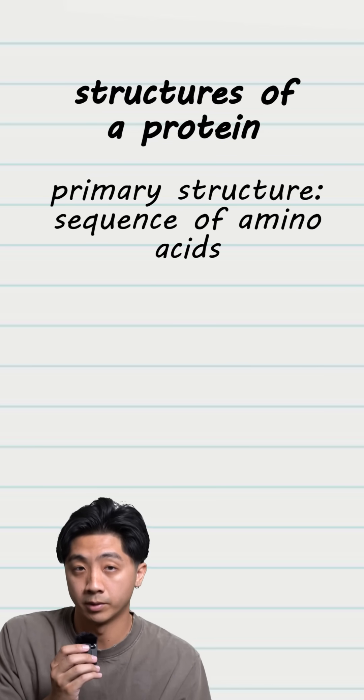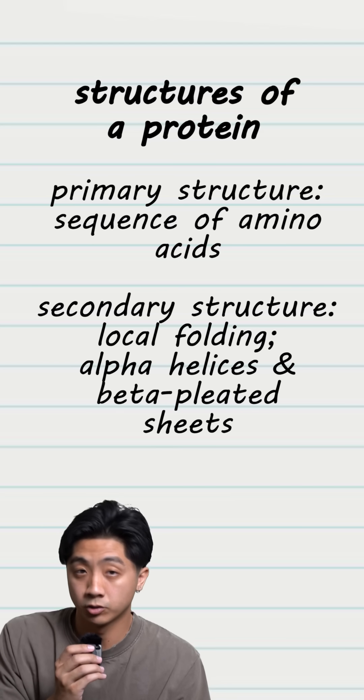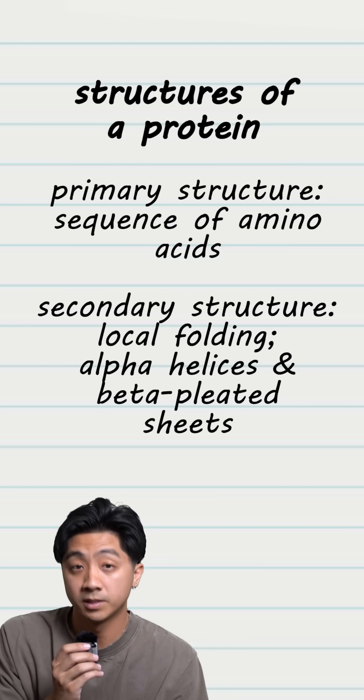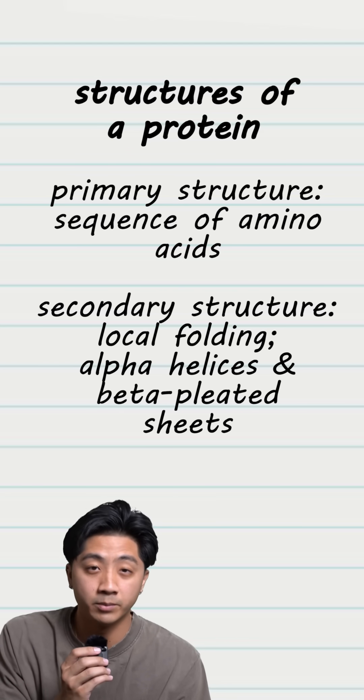The primary structure of a protein is the sequence of amino acids. The secondary structure involves local folding, specifically noted by alpha helices and beta pleated sheets.